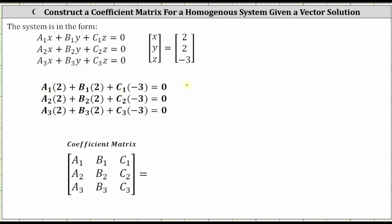To show the work: if a sub one is one, we have one times two; plus if b sub one is negative one, we have negative one times two; and if c sub one is zero, we have plus zero times negative three. Two plus negative two plus zero is zero, so these coefficients satisfy the equation with the given solution two, two, negative three. Therefore one possibility for the first row in the coefficient matrix would be one, the coefficient of x; negative one, the coefficient of y; and zero, the coefficient of z.